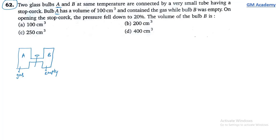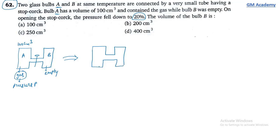Bulb A has volume 100 cm³ with gas at pressure P. On opening the stop cork, the pressure fell to 20% of original. So final pressure = 0.2P. We need to find the volume of bulb B.